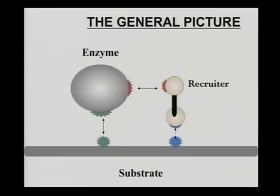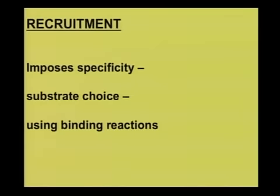RNAs are perfectly respectable specificity determinants. This principle, which was obviously relevant to transcription, applies very generally and helps us answer the larger question of how you can keep enzymes constant and yet have different regulatory networks. It also reveals what the enzymes that are in the pathway do.